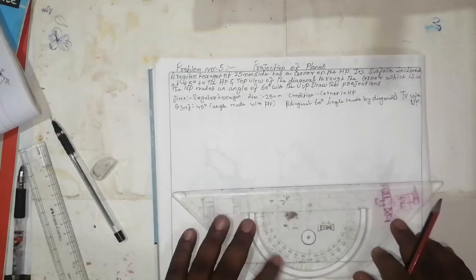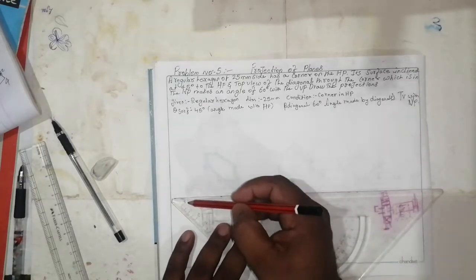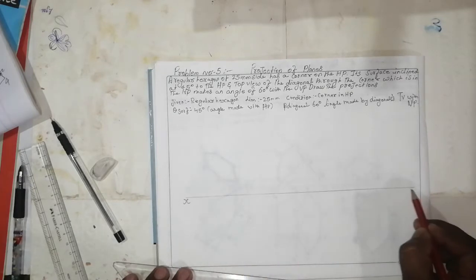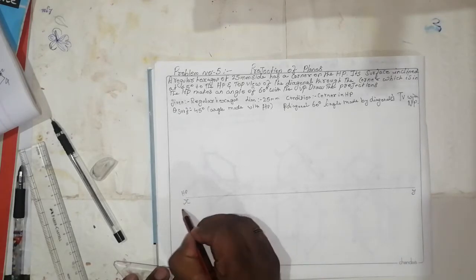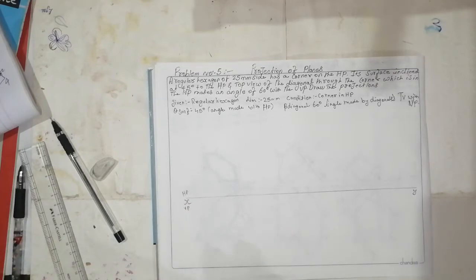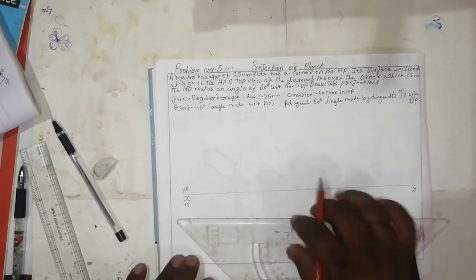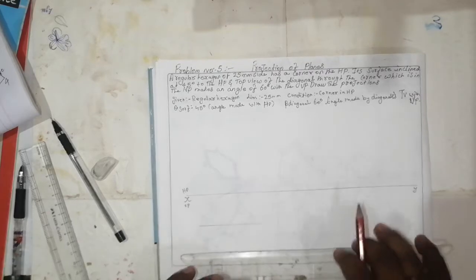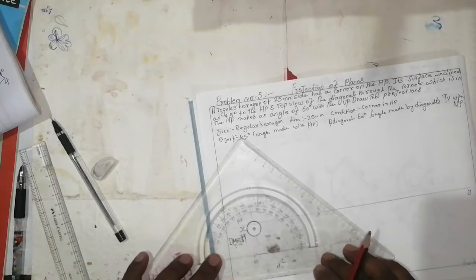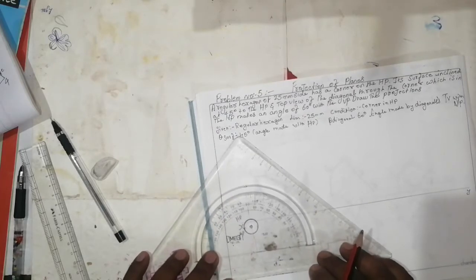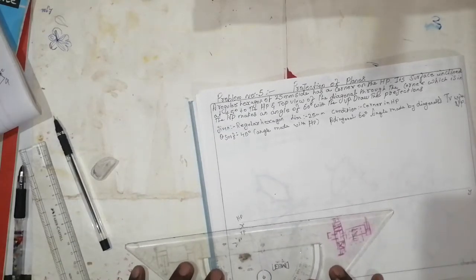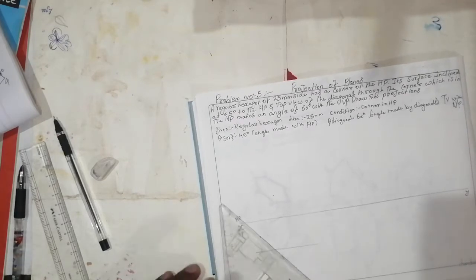Now, how to take the top view and front view. Draw one simple axis line and name it as X and Y — representing HP and VP. Make one line like this, keeping it in the middle. Take 60 degrees on one side and again 60 degrees on the other side.